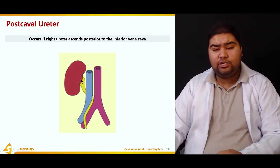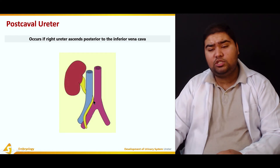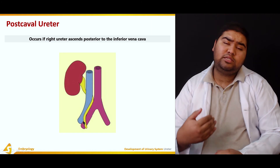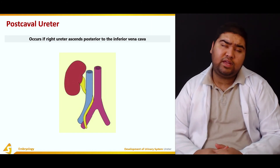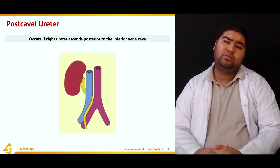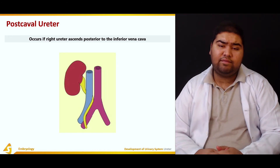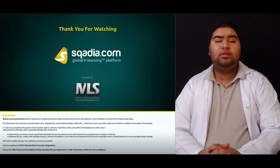Finally, we can have a postcaval ureter. This occurs when the right ureter ascends posterior to the inferior vena cava — the ureter lies posterior to the inferior vena cava. This condition is known as the postcaval ureter.